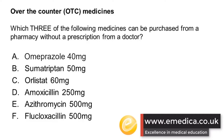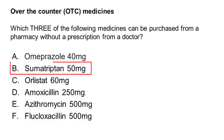This type of question is called a multiple best answer. As you can see, the question asks for three answers and you need to get them all right to get the full mark. The correct answers are B, Sumatriptan 50 mg. This can be sold without a prescription by a pharmacist as long as the patient has previously been diagnosed with migraine.